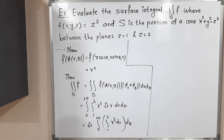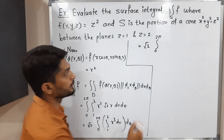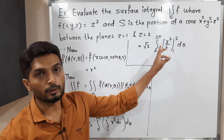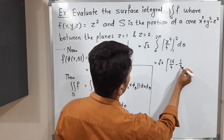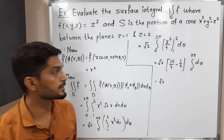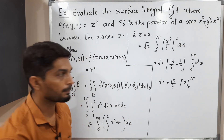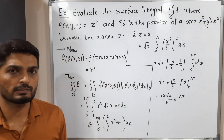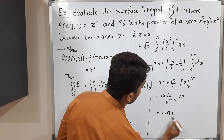Solving the inner integration with respect to R: the integral of R cubed is R to the 4th over 4, evaluated from 1 to 2. Putting in the limits: 2 to the 4th is 16, so 16 over 4; and 1 to the 4th is 1, so 1 over 4. Subtracting: 16 minus 1 equals 15, giving 15 over 4. This is a constant, so we now integrate over theta from 0 to 2 pi: 15 root 2 over 4 times theta evaluated from 0 to 2 pi equals 15 root 2 over 4 times 2 pi. The 2 in numerator and 4 in denominator simplify, giving 15 root 2 pi over 2.